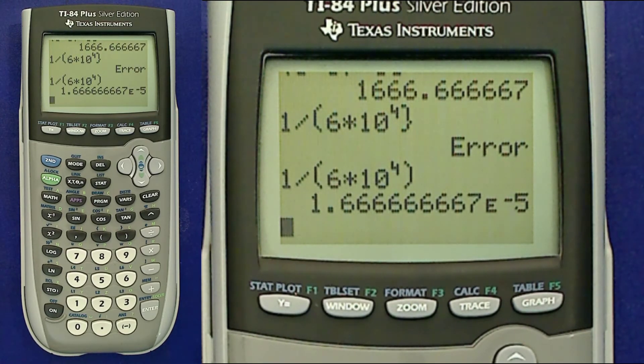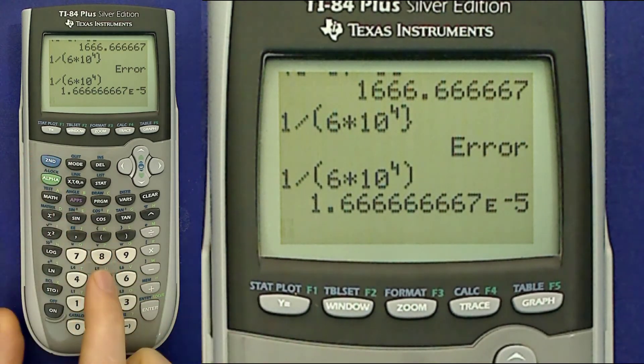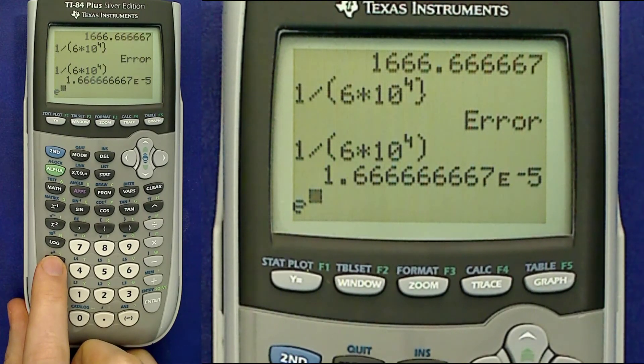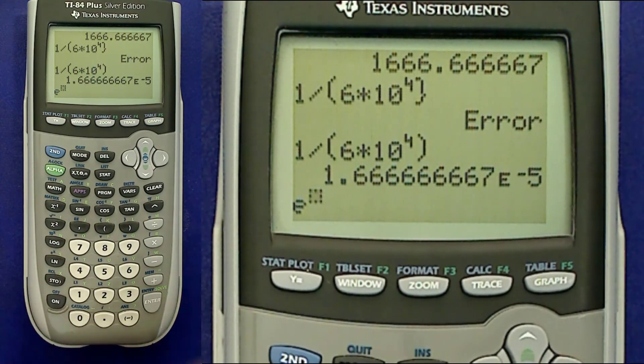So again, just to tell you, for the most part while you're doing exponential calculations, the key that you actually want most often is to do second and then this ln key to get the e to the power function. And the others have their own separate meanings. Be sure not to get them confused.